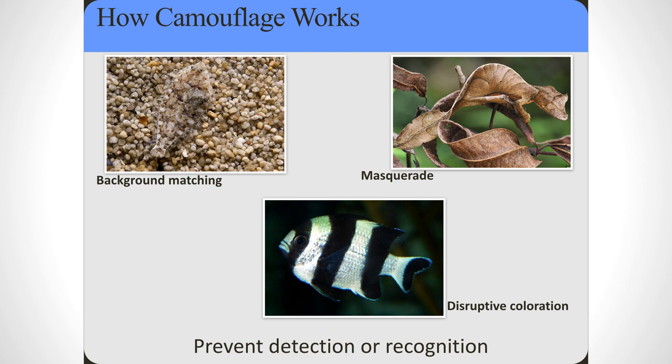There are multiple ways camouflage can work. First, background matching — standard army combat camouflage tries to blend in with as many backgrounds as possible. Second, masquerade — pretending to look like something you're not, such as an insect that looks like a leaf. Third, disruptive coloration — having patterns that disrupt object identity, so that vivid stripes break up the outline of, say, a fish, making it harder to identify. The goal is either to prevent detection or to prevent recognition, so a predator can't attack what it can't find or identify.